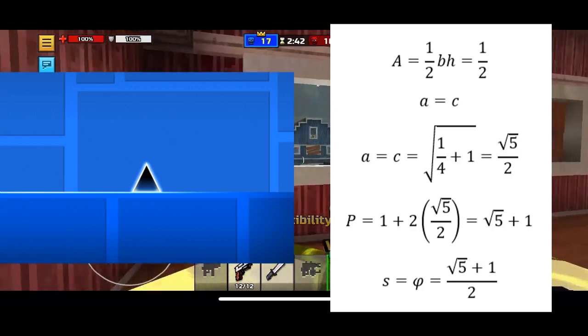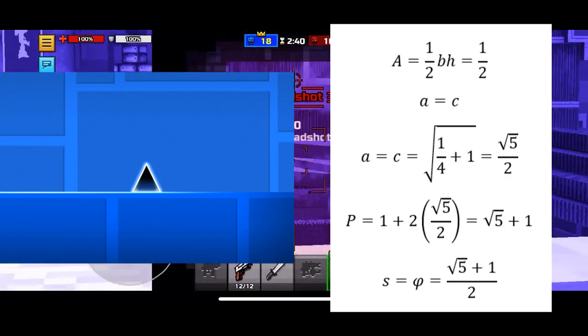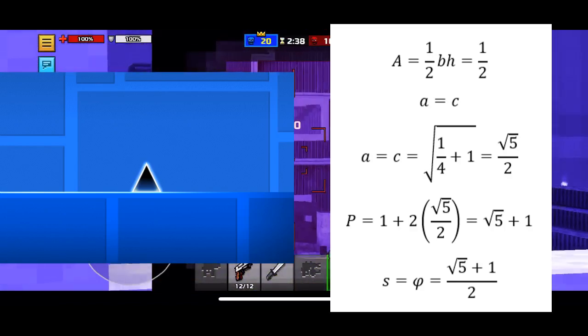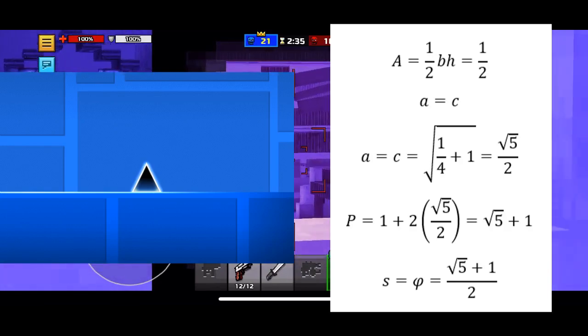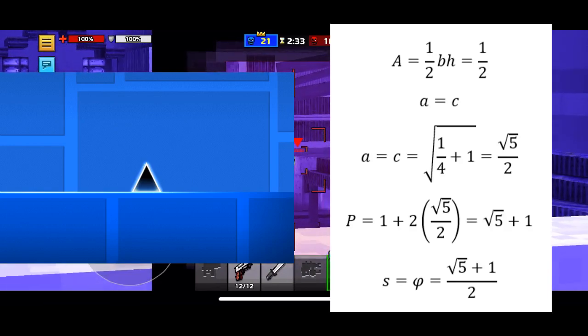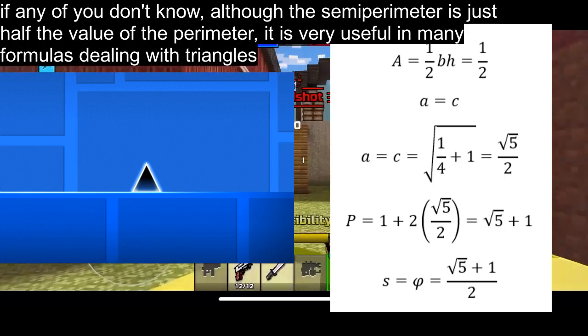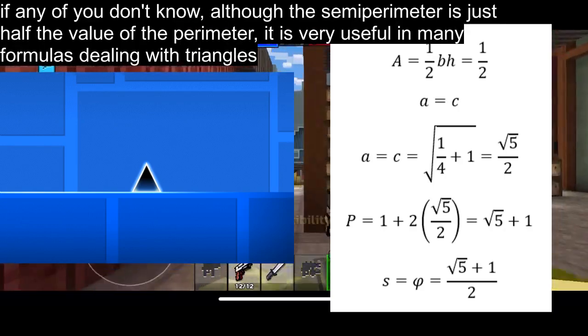The sides measure 1, square root of 5 over 2, and square root of 5 over 2, with square root of 5 over 2 being the length of the legs of the spike. The perimeter is square root of 5 plus 1 and the semi-perimeter is the golden ratio or square root of 5 plus 1 all over 2.